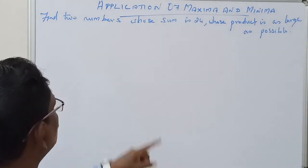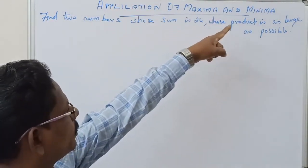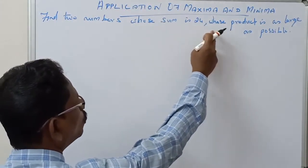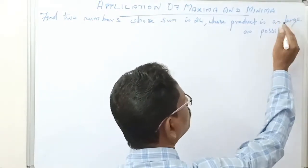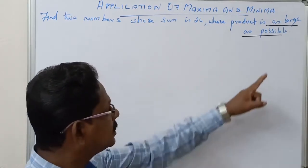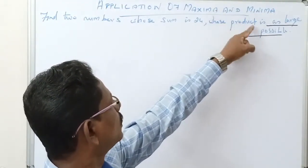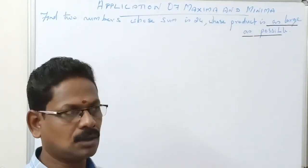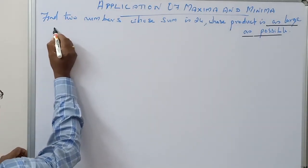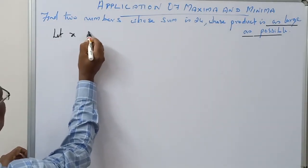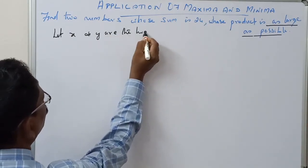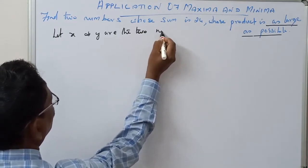Good morning students. Application of maxima and minima: find two numbers whose sum is 24 and whose product is as large as possible. As large as possible means maximum. So now let x and y be the two numbers.